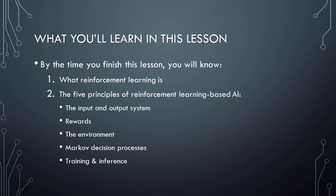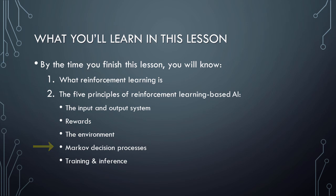By the time you have finished this video, you will know what reinforcement learning is, and the five principles that underlie reinforcement learning based artificial intelligence, including the input and output system, rewards, the environment, Markov decision processes, and training and inference. Once we understand all of these concepts, we'll be fully equipped to start building some real AI models. So why wait? Let's get started.